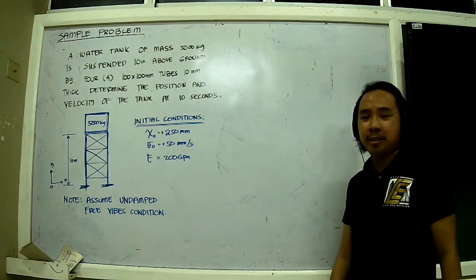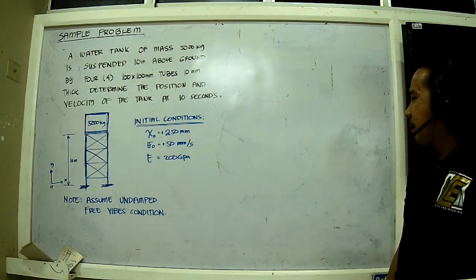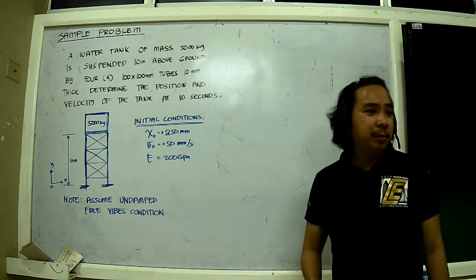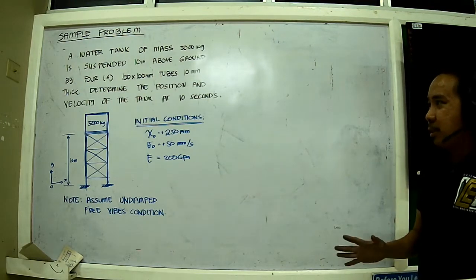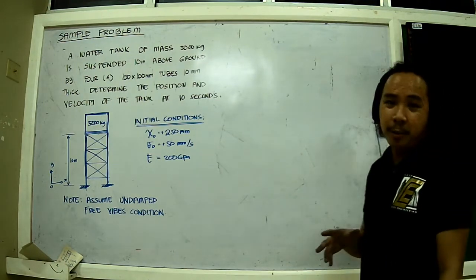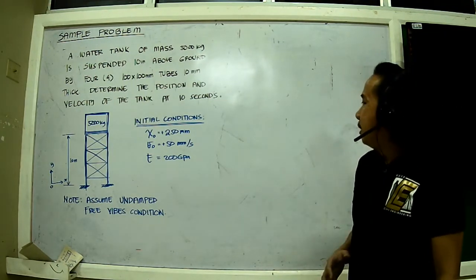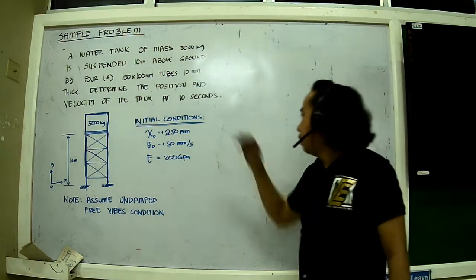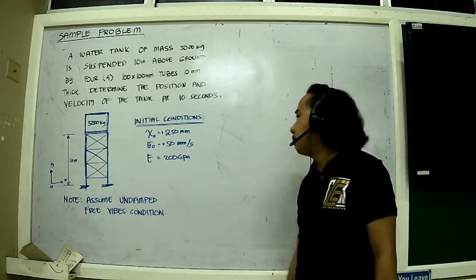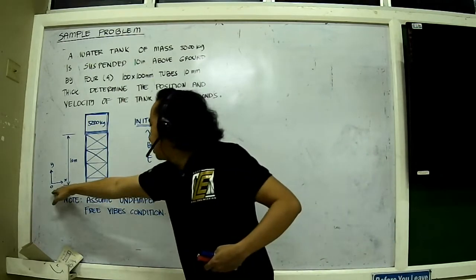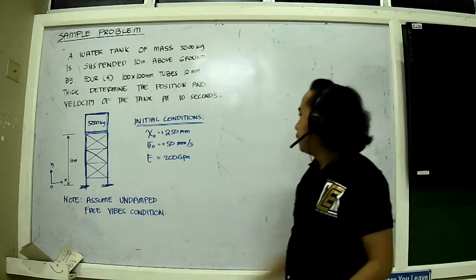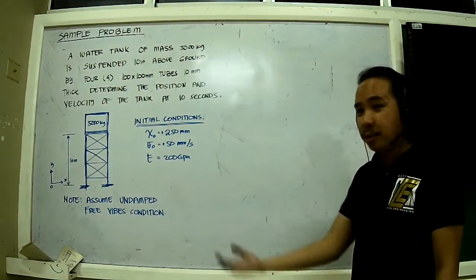The problem states this is a free vibration condition, so there's no damping coefficient and no forcing function. Basically this is just a problem of mathematics. We have initial conditions: the initial position X0 is positive 250 mm, taking note of our sign conventions - positive here, negative down. The initial velocity is 50 mm per second, positive in this direction.